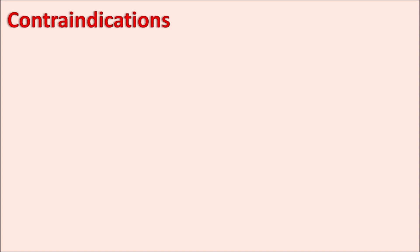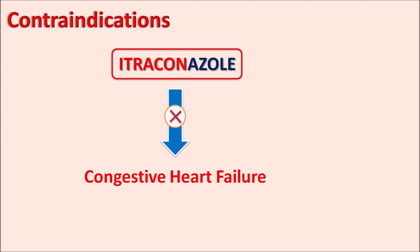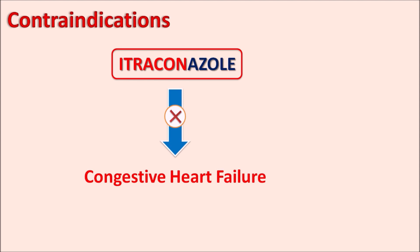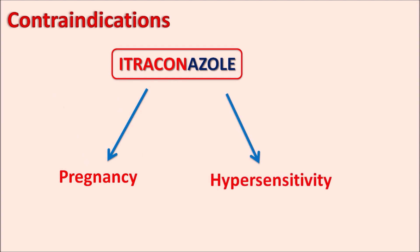As discussed, itraconazole can produce negative inotropic activity, so one of the important contraindications is congestive heart failure — in patients having any symptoms of congestive heart failure this drug is contraindicated. Similarly, this drug is also contraindicated in pregnant women, as well as in patients developing any hypersensitive or anaphylactic reactions.